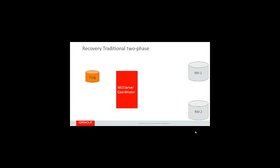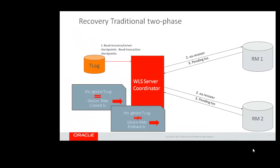How does recovery work for a traditional two-phase commit? The transaction manager first will read the resource and server checkpoints, as well as all the transaction checkpoints written to the T-Log. It will call XA Recover in parallel, and the resources will return a list of pending transactions. The transaction manager will compare the global transaction ID of transactions written to the T-Log against the global transaction ID of transactions returned from the resources when XA Recover was called.